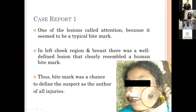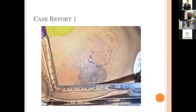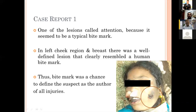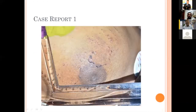One of the lesions called attention because it seemed to be a typical bite mark on examination. The left cheek region and the breast showed well-defined lesions that clearly resembled a human bite mark. Thus, the bite mark was a chance to identify the suspect as the author of all the injuries. Following AFOS and ABFO guidelines, we recorded the case. Initially it was recorded by police officers and sent to me; I later requested that, if the body had not been cremated, I would like to conduct an examination. I went to the mortuary and examined the case with scale photographs.